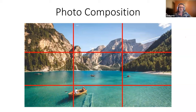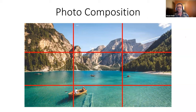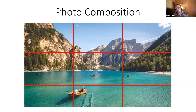Now let's talk about photo composition. You have a handle on the settings, you're ready to go out and take a photo — but there's more to it than just pointing and shooting. If you want to tell a story, and I always go back to storytelling, photo composition plays a big role. You can have nice, clear, crisp photos, but without good composition, your images won't be as effective.